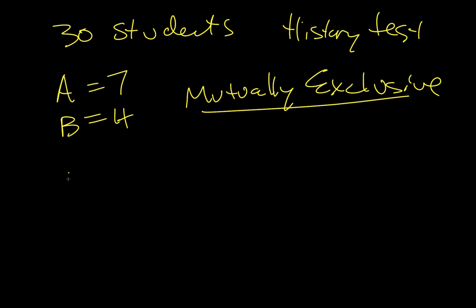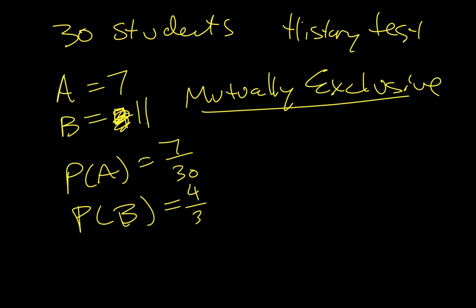And so now they want us to find probability of A. So probability of A is simply 7 out of a class of 30. Probability of B is going to be... oh sorry, that wasn't a 4, that was an 11. I misread what I wrote. So that was an 11, and so this would be 11 out of 30.